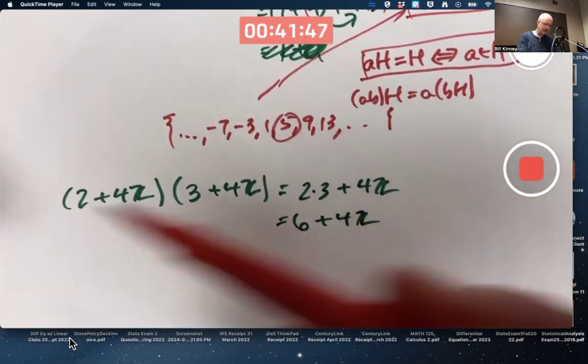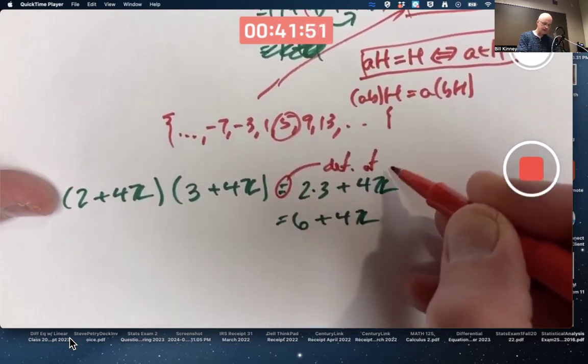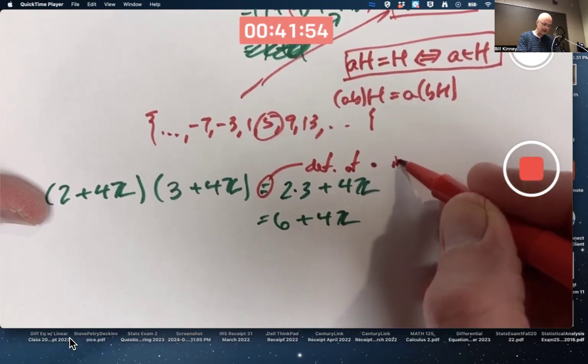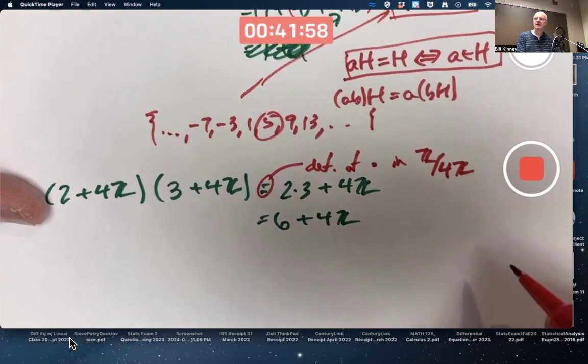That first step is the definition of the multiplication in the factor ring, which is not a group operation, it's the multiplication.